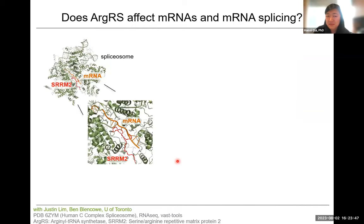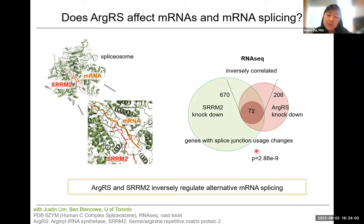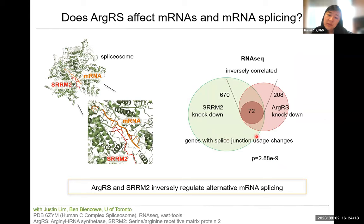That was interesting because SRRM2 is a member of the spliceosome, so the next question was: does this difference in trafficking affect its function in the spliceosome? Does it influence how SRRM2 interacts with other splicing factors or integrates into the spliceosome? We used RNA-seq and looked at splice junction usage changes between cells with an SRRM2 knockdown — identifying splice junctions susceptible to modulation by SRRM2 — and compared that with splice junctions changed upon ArgRS knockdown. We found a good number of genes that were inversely correlated in their splice junction usage, meaning they were upregulated upon SRRM2 knockdown and the other way around upon ArgRS knockdown, suggesting ArgRS may be sequestering SRRM2 and hindering its trafficking.